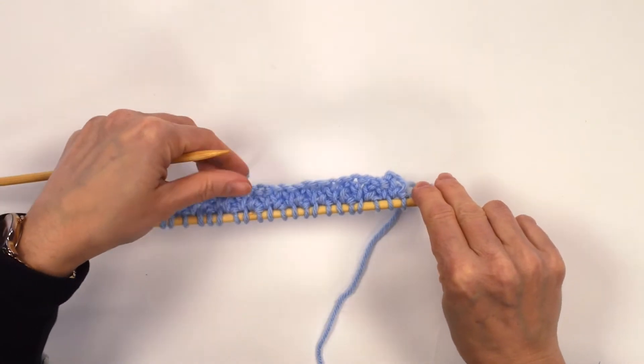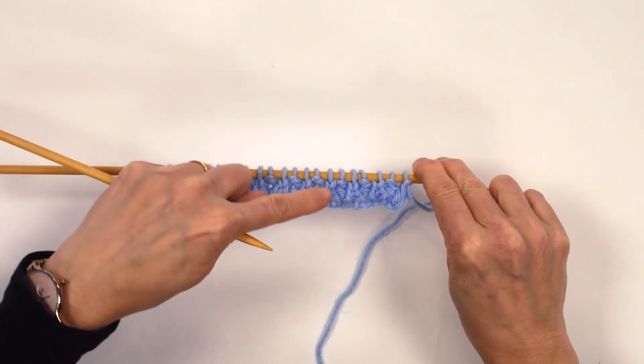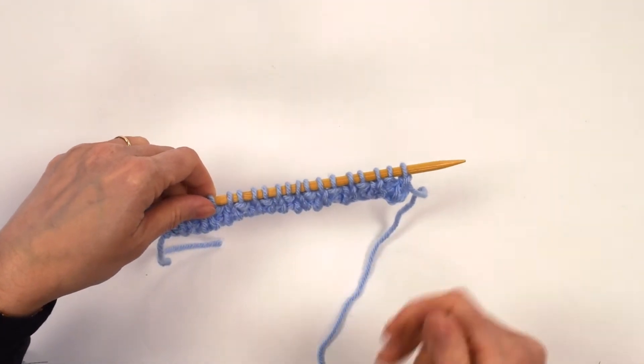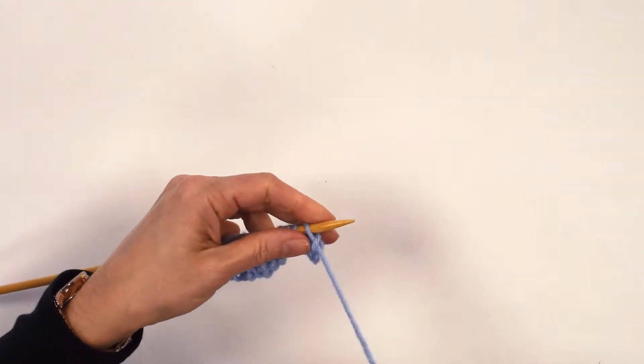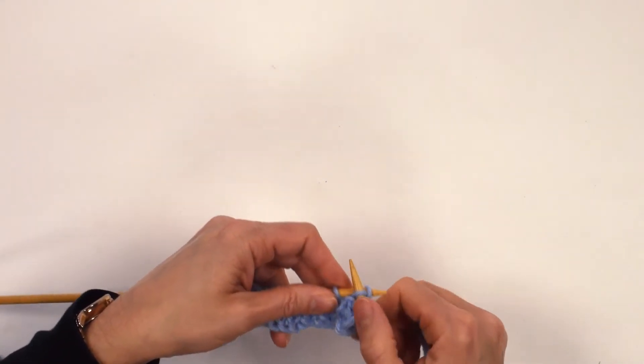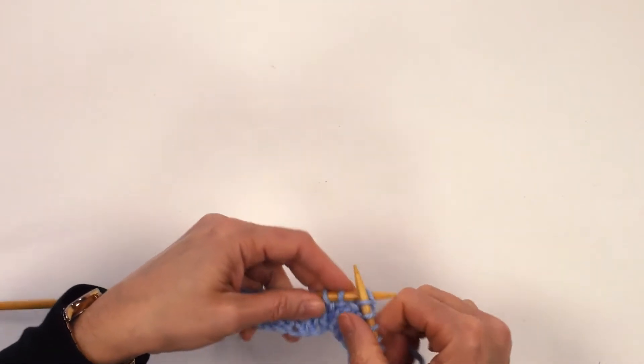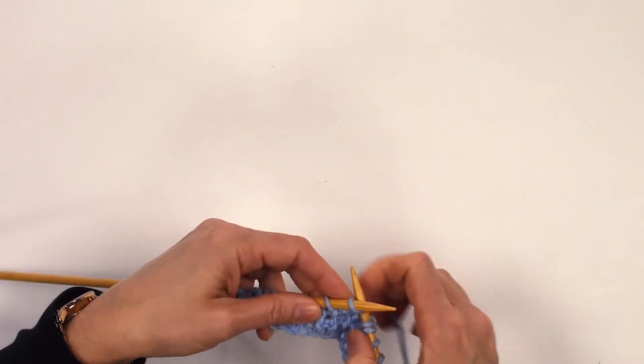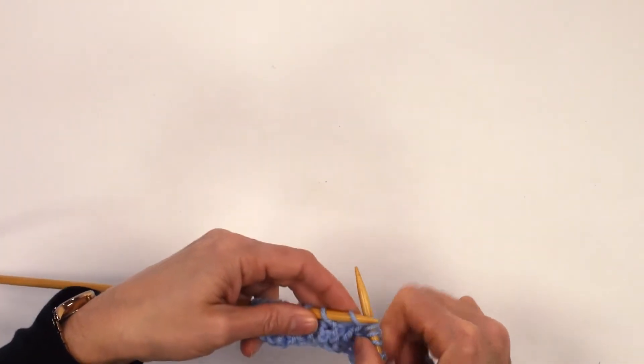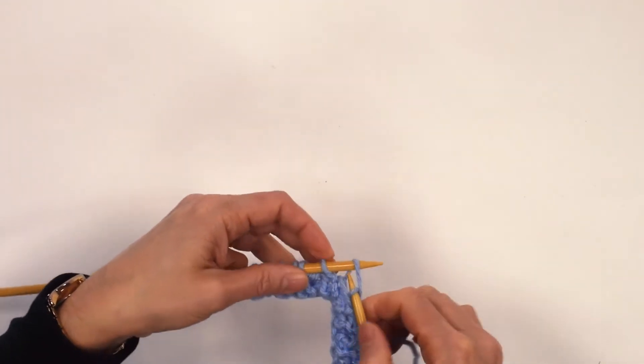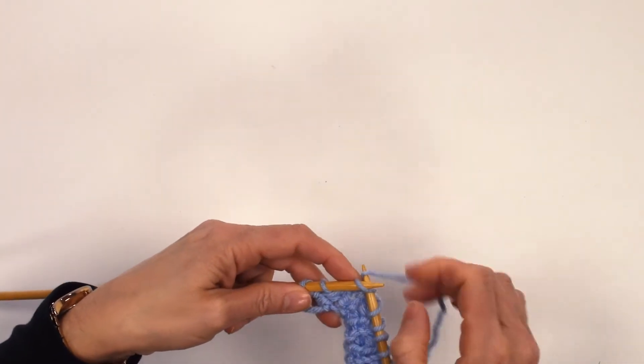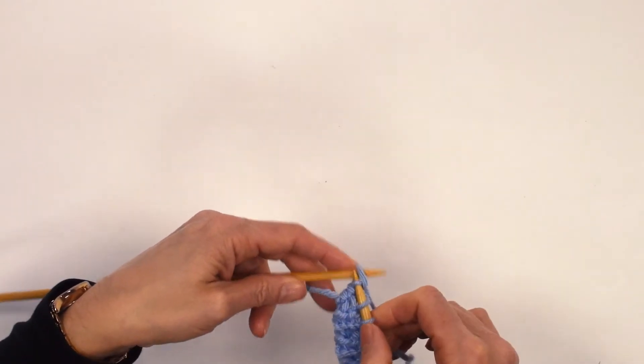So you can see here how you're starting to get the deeper, wider ones. I'm just going to fairly quickly do one more row so that you can then see what it looks like. So I've slipped my first stitch and I'm knitting across it. So a simple knit across there.